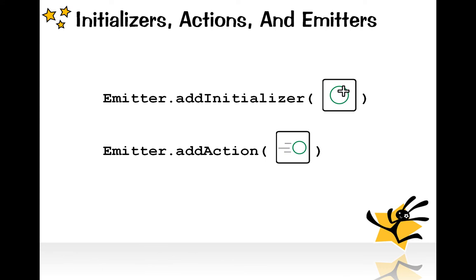An initializer is added to an emitter using the emitter's addInitializer method, and an action is added to the emitter through the emitter's addAction method.